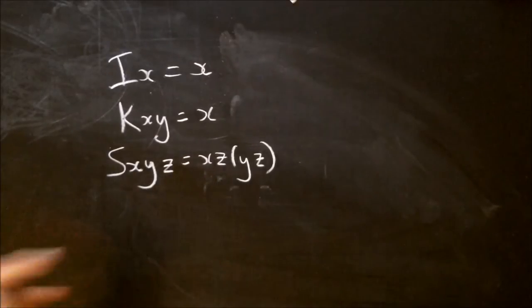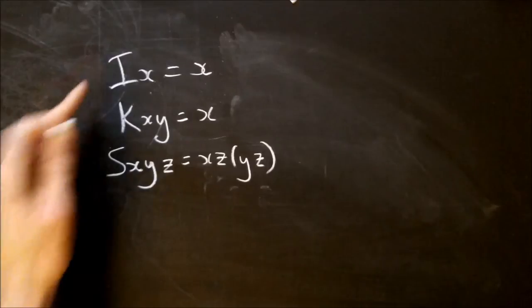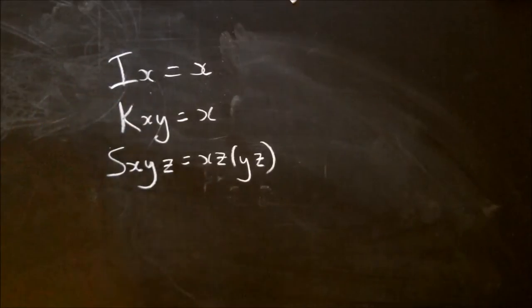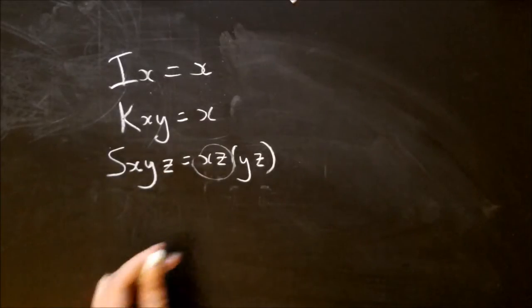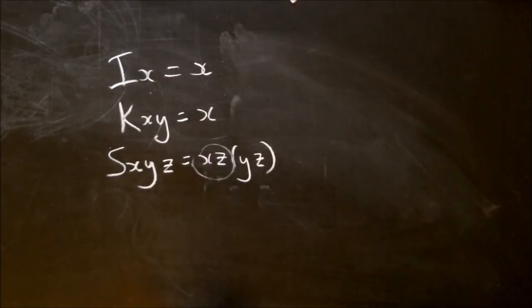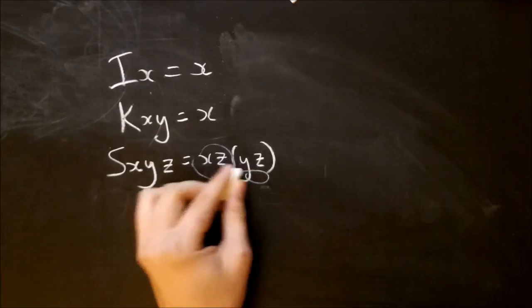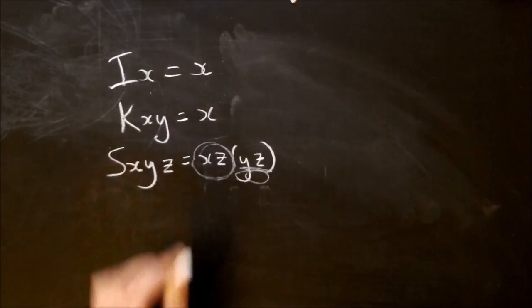Remember, everything you get is still a function. You can only ever get functions back, or combinators back. So x, z is still a combinator. So that means you then apply y, z, this thing, to the result of what x, z was.